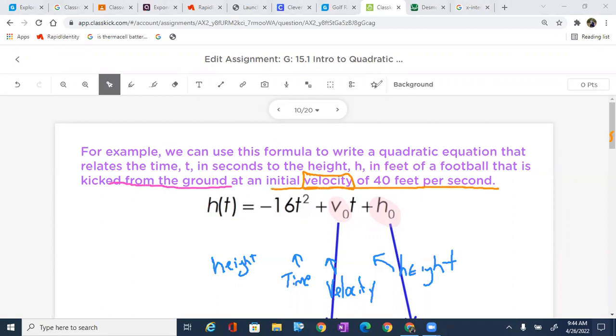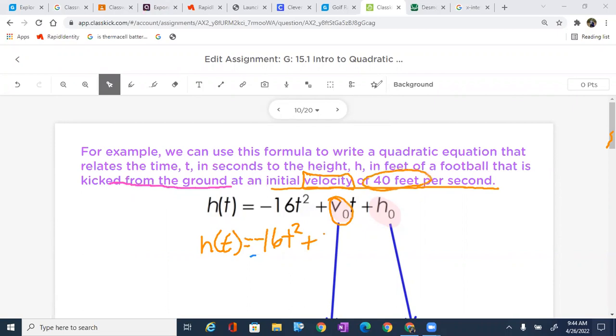Let's go ahead and write an equation. So initial velocity, which is v₀, is going to be 40. So I'm going to write this. I'm going to say, h of t equals negative 16t squared plus v₀, which is 40 feet. So I'm going to put 40t plus h₀, which is kicked from the ground. Well, what is the height when it's kicked from the ground? From the golfing activity, we found that was zero.